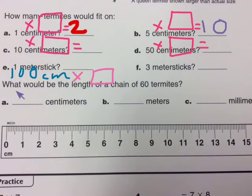And the next thing they're going to do is ask you another question to challenge your thinking. So what would be the length of a chain of sixty termites? So if you had sixty termites lined up, how many centimeters would it be, how many meters would it be, how many millimeters would it be? I think a useful strategy for this would be to make something we call a t-chart, and we can use the data we already have here to help us with the t-chart to figure out the answer to this problem.